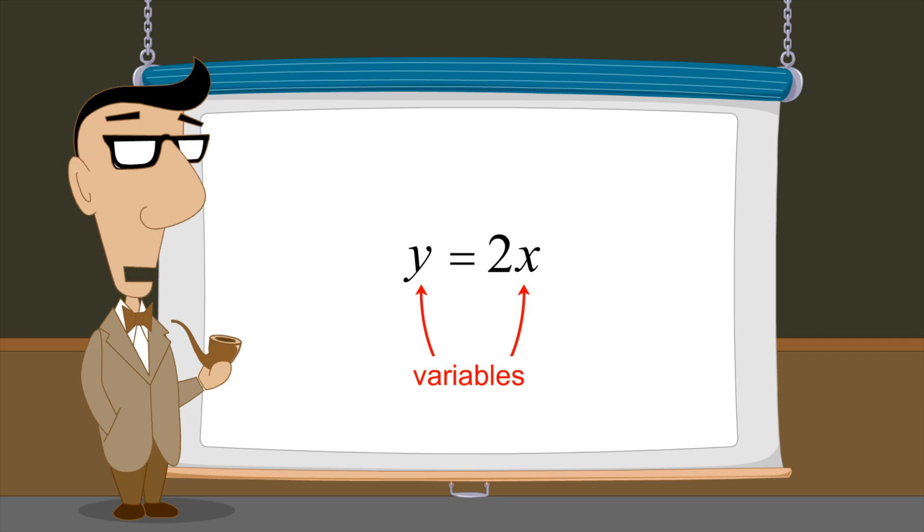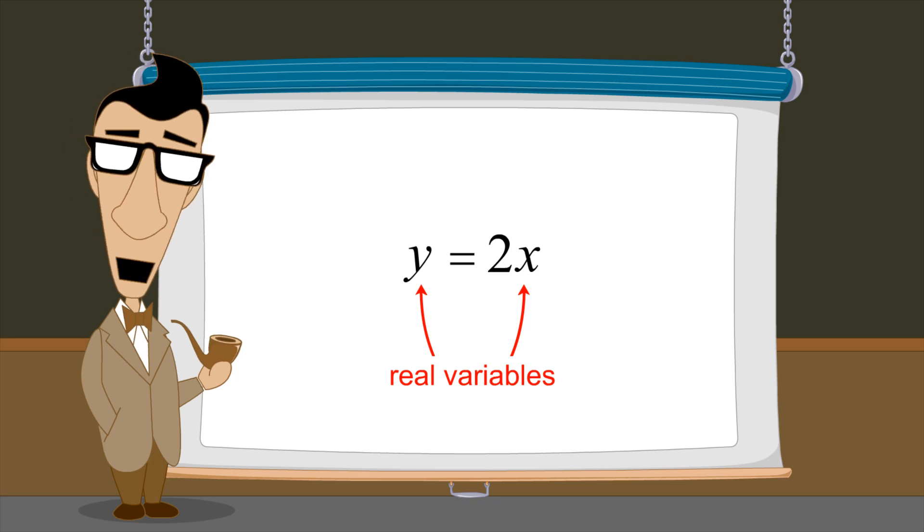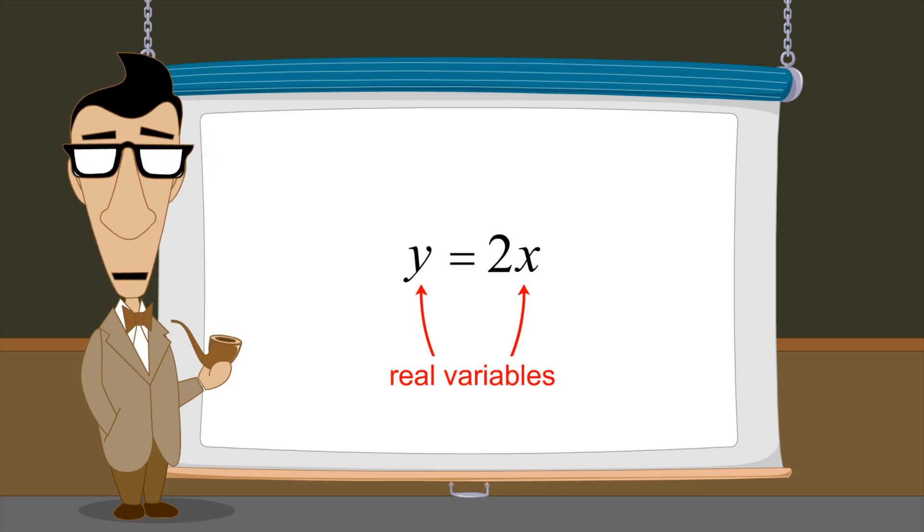Variables whose values can be any real number are called real variables. In algebra texts, variables are often assumed to be real unless otherwise stated.